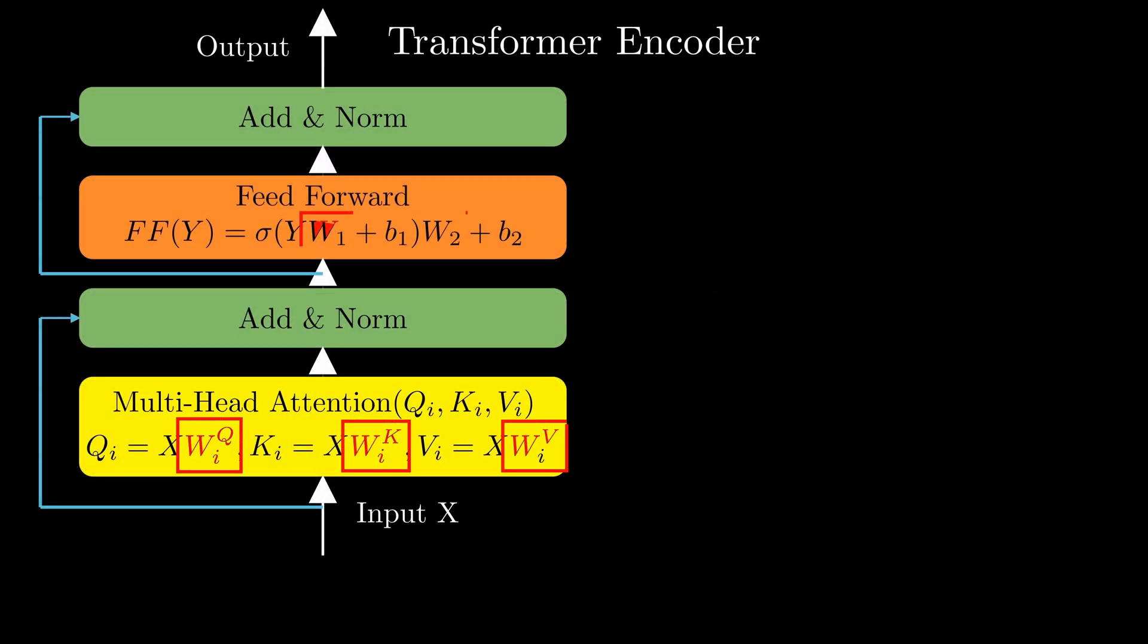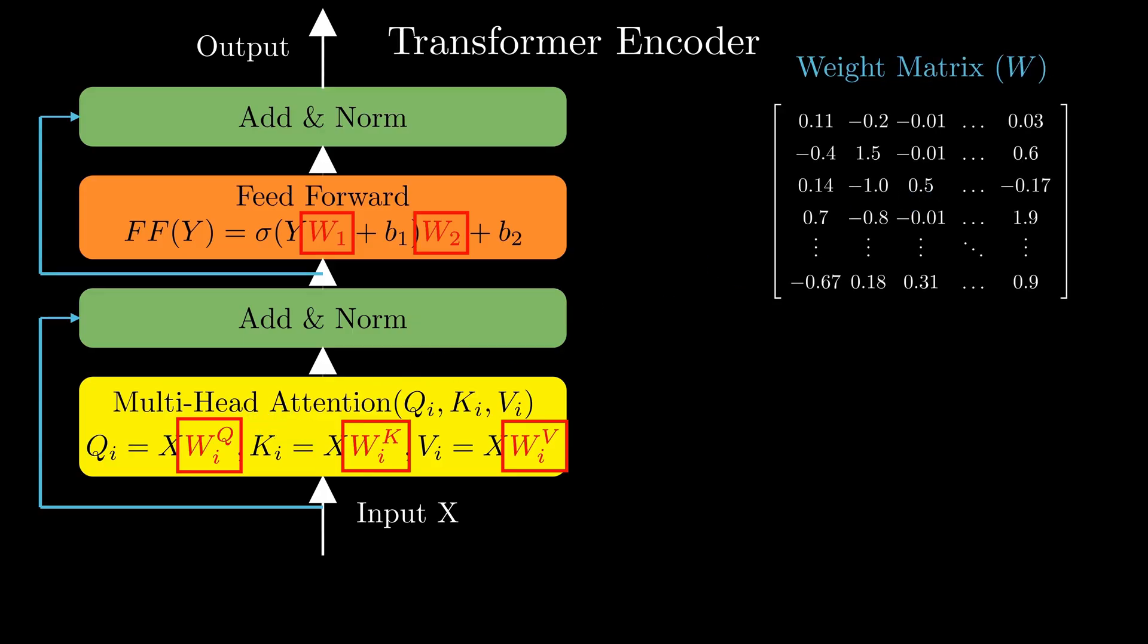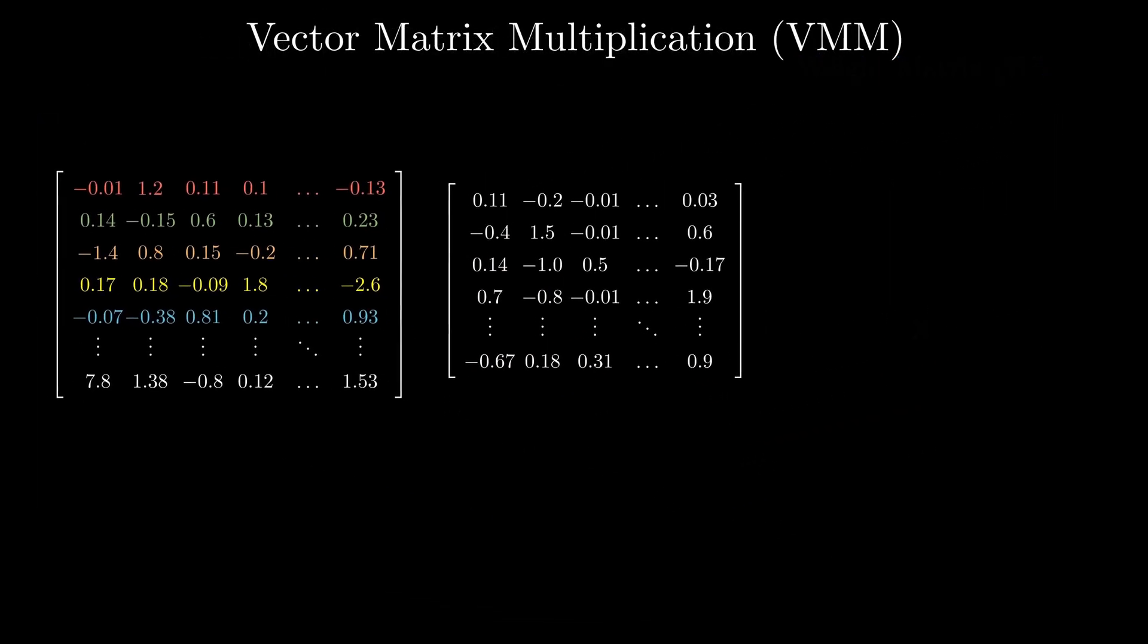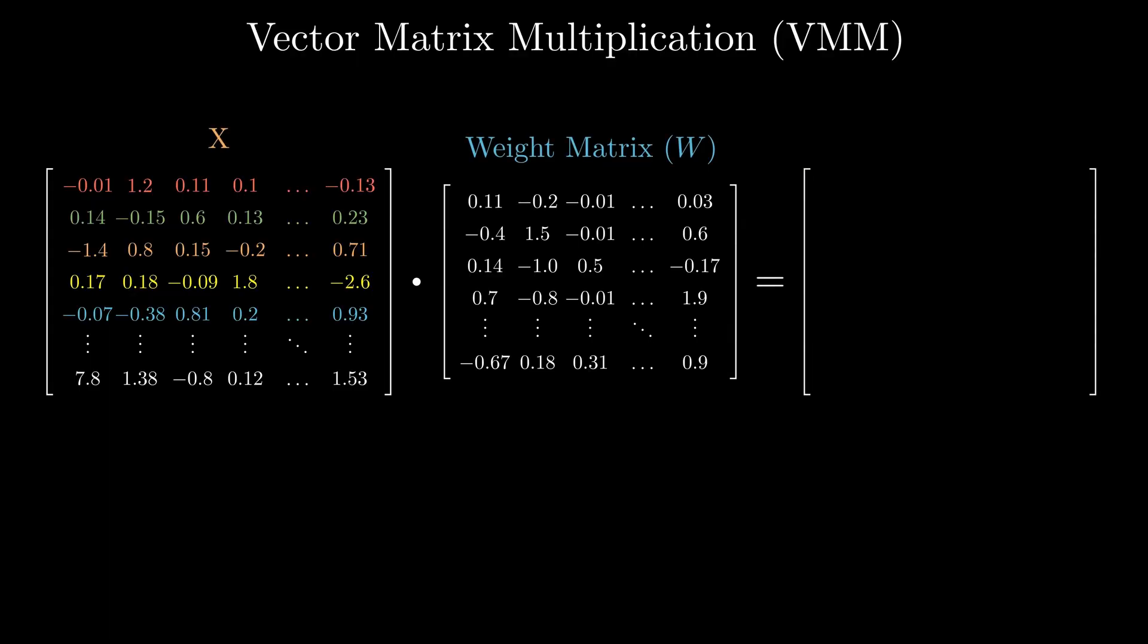All AI models use billions of parameters called weights. These are stored in big grids called matrices. To train the model or make predictions, the models have to do calculations with these matrices and the input vectors, which are number versions or encodings of things like images or text.